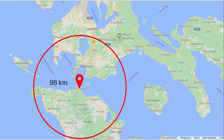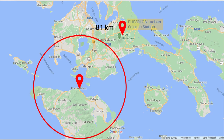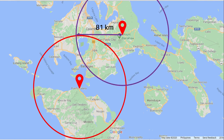Moving on to Feebox-Lukban Seismic Station, which is 81 kilometers from the epicenter. Again, since we are not certain of its direction, we are going to draw a circle with an 81-kilometer radius. Notice that the two circles intersect at two points. This gives us the idea that the epicenter may be found at one of these two points.